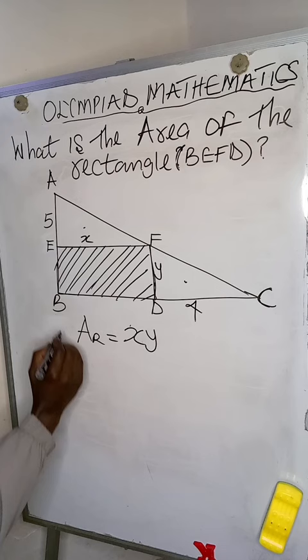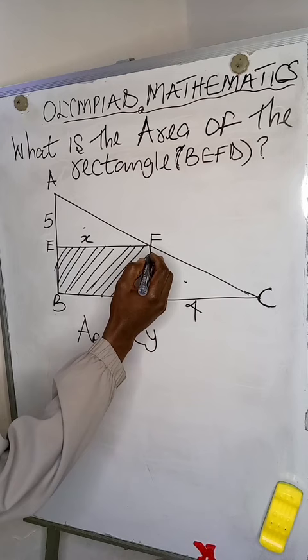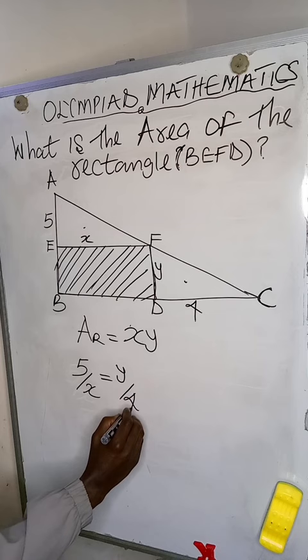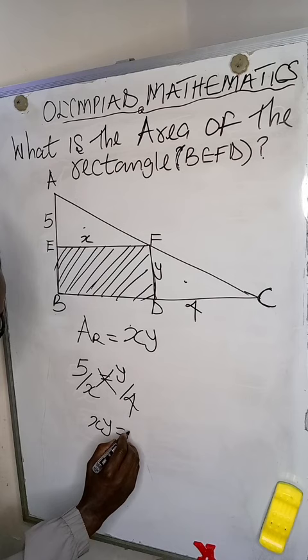For this, we have 5 divided by x equal to y divided by 4. So if we cross multiply, we are going to have xy equal to 20.